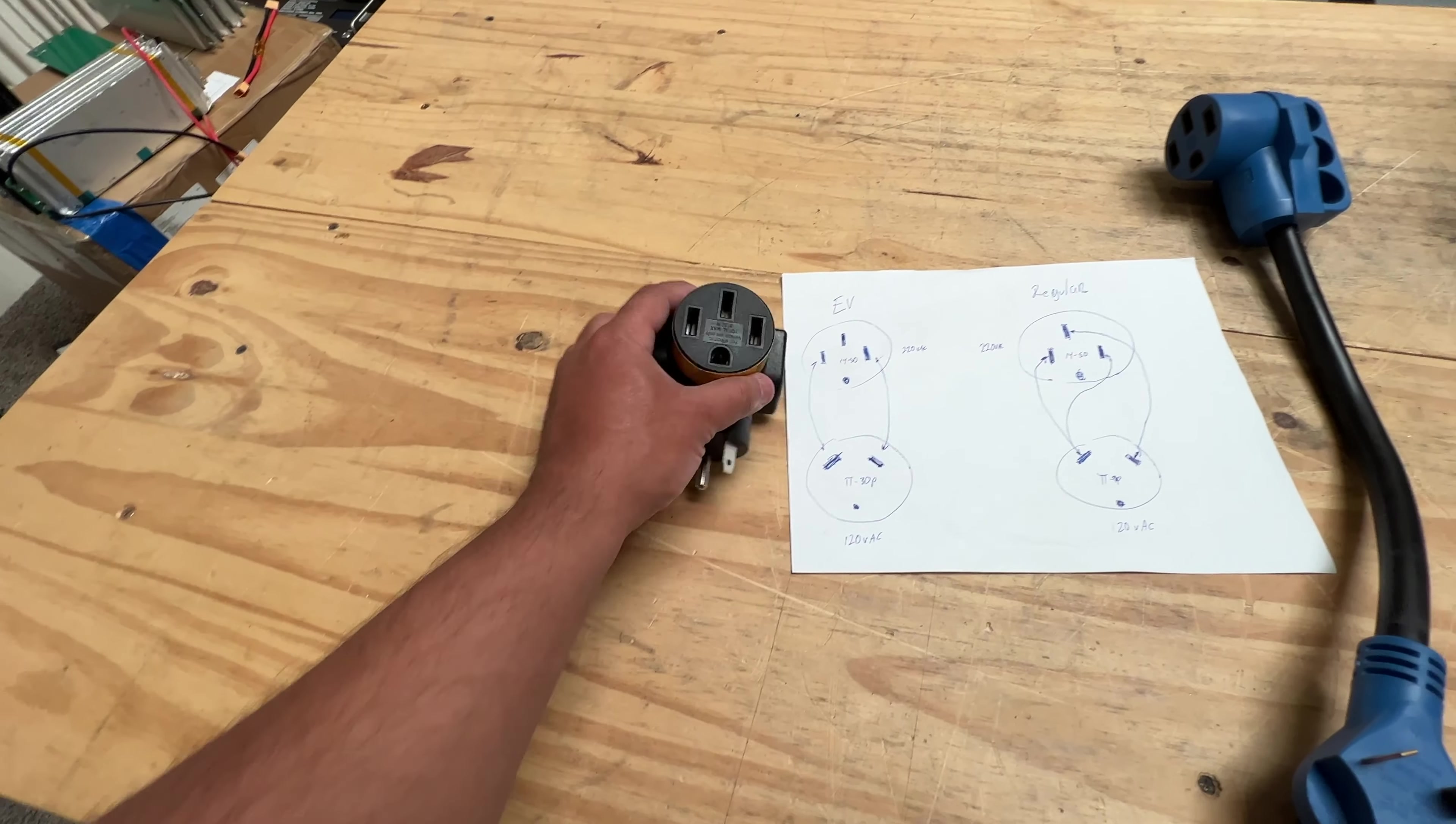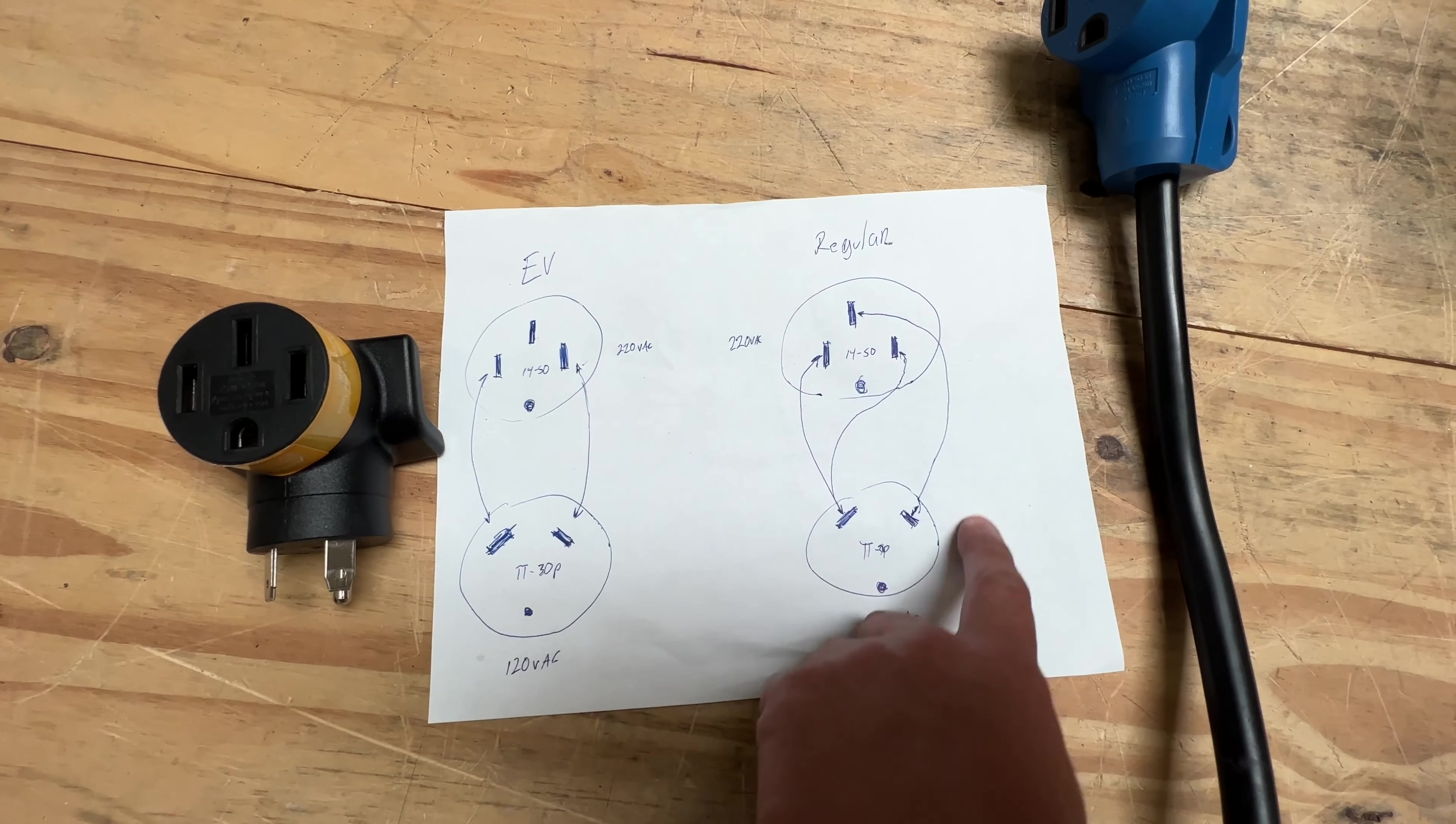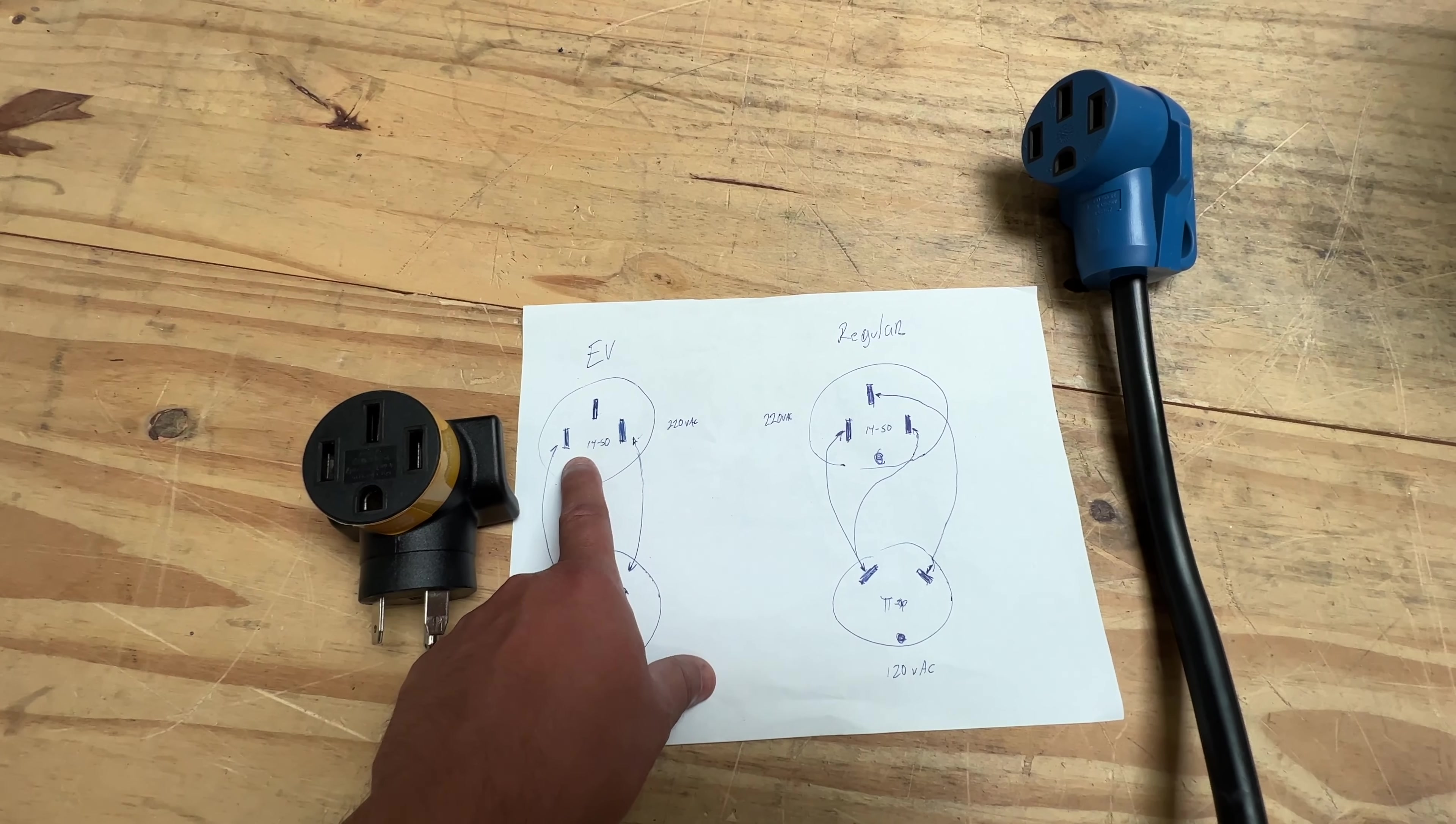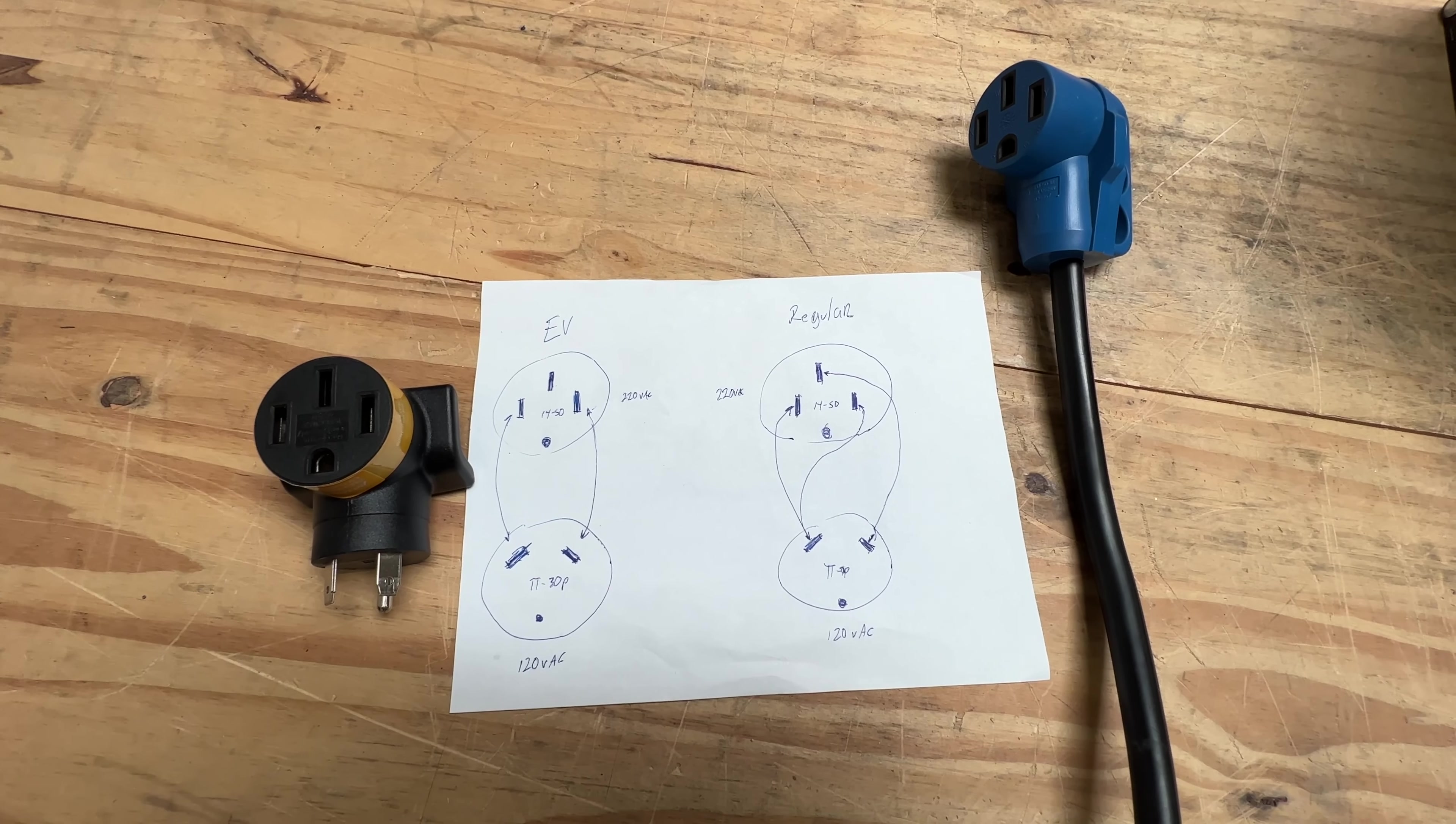Those are the differences between these two. I hope this is understandable and not too confusing. That's how these are wired in there, and you can understand the differences between the two and why one only works with the EVs and other devices looking for 120 and 220 in the same pins, and this is kind of built for RVs. All right, thank you for this video. We'll see you guys on the next one. Bye.